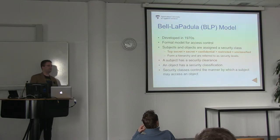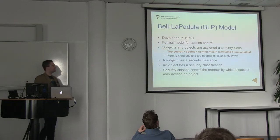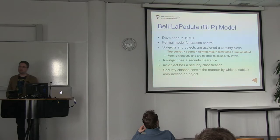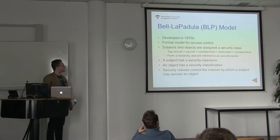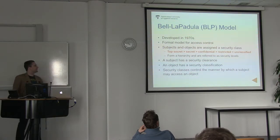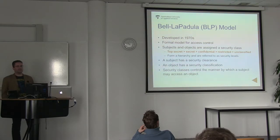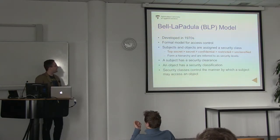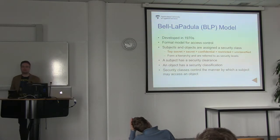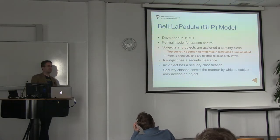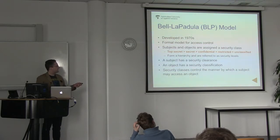There are subjects and objects — you'll remember this from previous lectures. The subject is usually a person or process, and objects are the actual data most of the time. A subject has a clearance — usually something like top secret — and objects have classifications that say what kind of clearance is needed to access them.